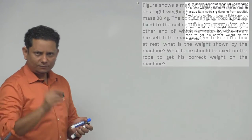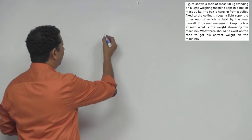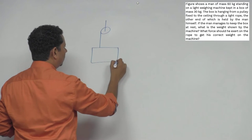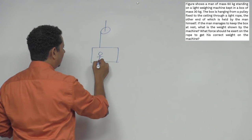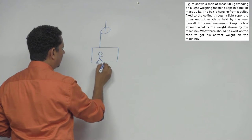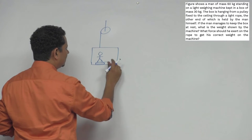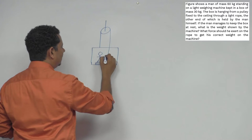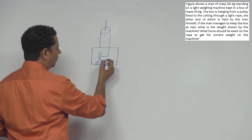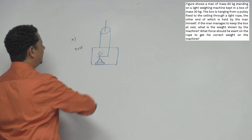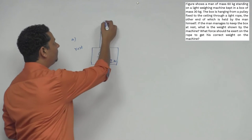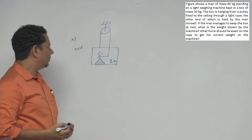The scenario is: you have a pulley, and from it a box is hanging. Inside the box, a man is standing on a weighing machine. The man is holding the rope with his hands. The system is at rest. In part A, we need to find the normal reaction between the man and the weighing machine.